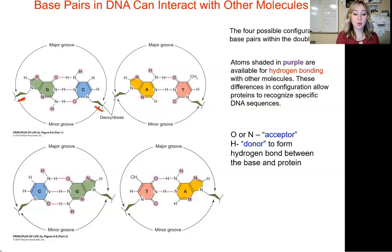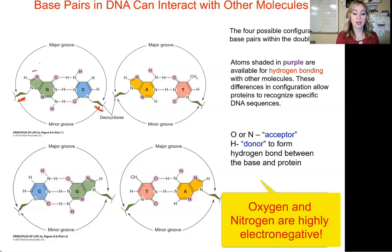For example, this guanine has nitrogen, so nitrogen will have a negative or partially negative charge, and oxygen will have a negative charge. Hydrogen is a proton, so it has a positive charge. Nitrogen is an acceptor, oxygen is an acceptor, hydrogen would be a donor.